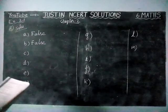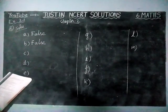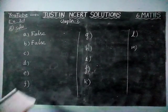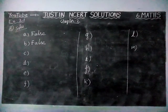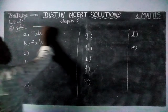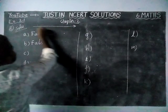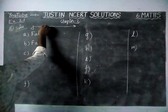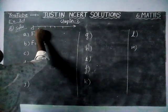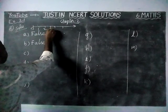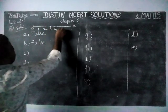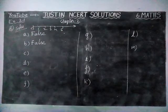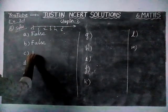Next, option C: '0 is the smallest whole number.' If you check the number line, 0 is the smallest number in the whole numbers. So that statement is true.